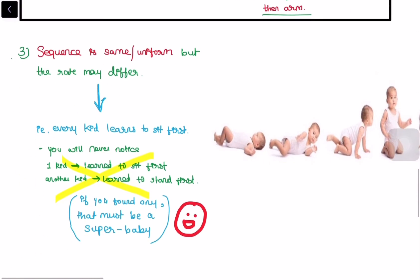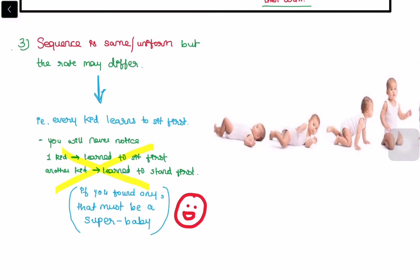So the third and last rule is sequence is always the same or uniform, but the rate may differ. One kid may start sitting early than the another kid before two or three months, but you will never ever find any kid who started learning to stand first and then to sit. This kid may be the super baby, just kidding, but the sequence is always remain uniform, but the rate may differ by two months or three months.